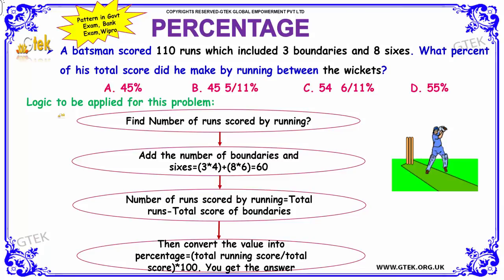The logic to be applied for this problem is: first, find the number of runs he scored by running, apart from the hits. Then add the number of boundaries and sixes to get the score earned by hitting. Subtracting the total score from boundaries and hits from the total runs gives the number of runs scored by running alone. Then convert those runs into percentage by dividing the running score by total score and multiplying by 100.